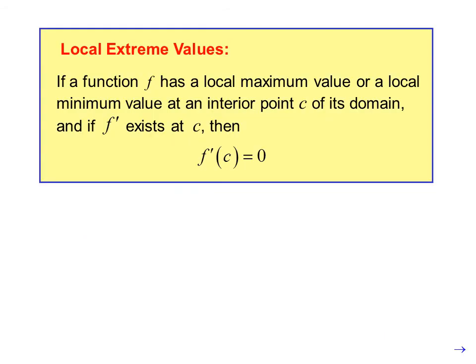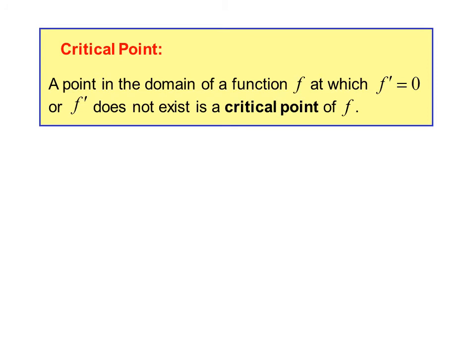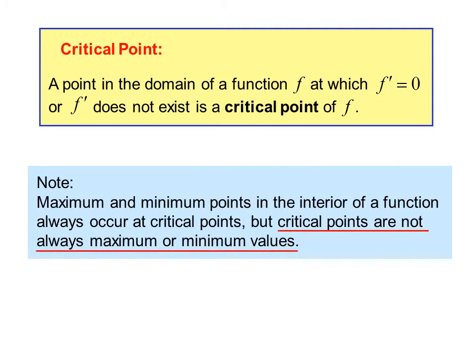Local extreme values: if a function f has a local maximum or local minimum value at an interior point c of its domain, and if f prime exists at c, then f prime of c equals zero — that is, the slope is zero. A critical point is a point in the domain of a function f at which f prime equals zero or f prime does not exist. Note that maximum and minimum points in the interior of a function always occur at critical points, but critical points are not always maximum or minimum values.